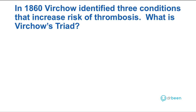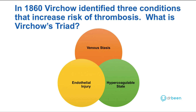In 1860, Virchow identified three conditions that increase the risk of thrombosis or blood clot — what is known as Virchow's triad. Venous stasis, endothelial injury, and a hypercoagulable state are the three things that compose Virchow's triad. When these three things are present at the same time, it increases your patient's risk of forming blood clots or thrombosis.